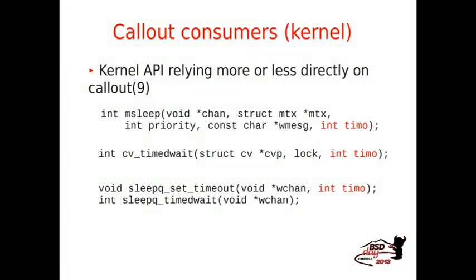After this introduction on how the API works, I'd like to talk about all the consumers within kernel and user space of callout. There are lots of functions, for example condition variables, which are a mechanism used in conjunction with locking primitives to see if a condition holds. The sleep queue mechanism allows you to put a thread sleeping for a given amount of time, and this amount of time is expressed using the timeout variable, and this value is passed directly to callout.